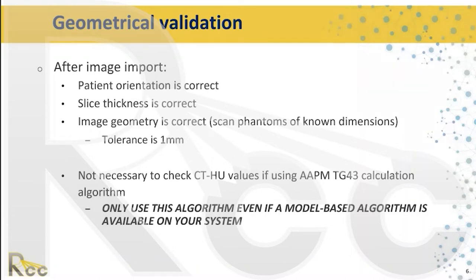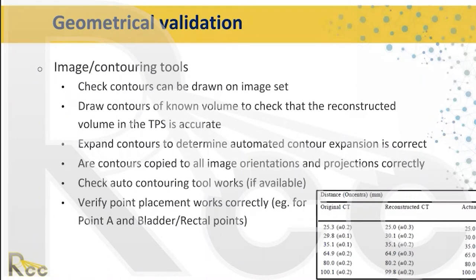It is not necessary to check CT Hounsfield units if you're using AAPM TG-43 calculation algorithms. Regardless of which planning system or dose calculation algorithm is used, we strongly recommend checking the performance against TG-43 or a similar formalism. We also validate contouring tools by contouring known volumes and checking expansions to ensure those dimensions are correct.